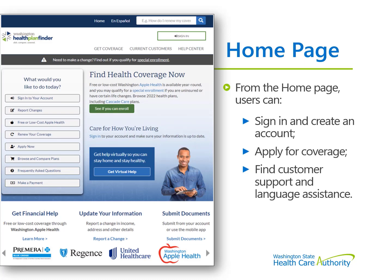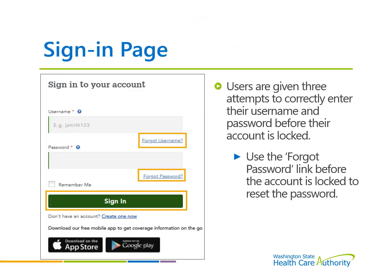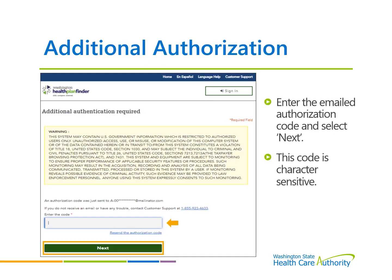On the homepage, users can sign in and create an account, apply for coverage, contact customer support, and get language assistance. Users are given three attempts to correctly enter their username and password before their account is locked. Use the forgot password link before the account is locked to reset the password. An authorization code will be sent to your email account. Enter the emailed authorization code and select Next. This code is character sensitive, so make sure there are no extra characters if using the copy-paste function.